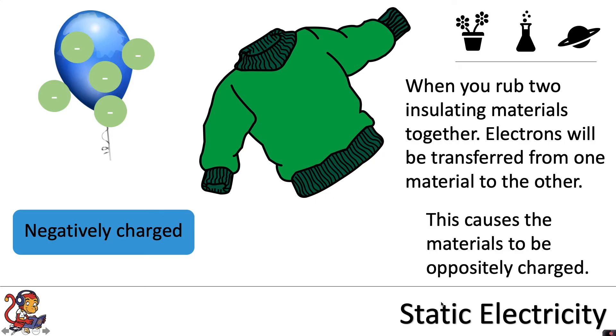The jumper has lost negative charges, it has lost electrons, so now the jumper will be positively charged. So the balloon has a build-up of negative charge and the jumper has a build-up of positive charge.